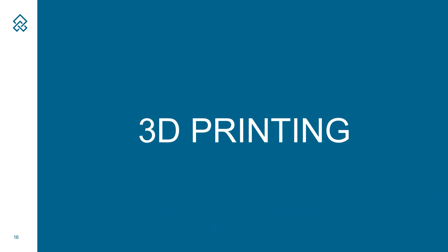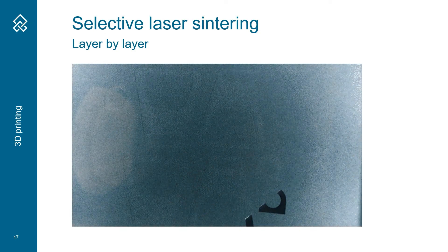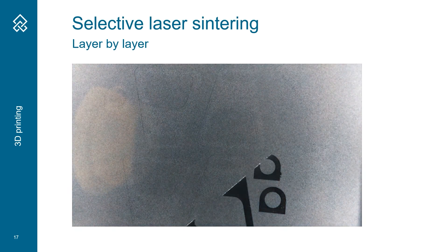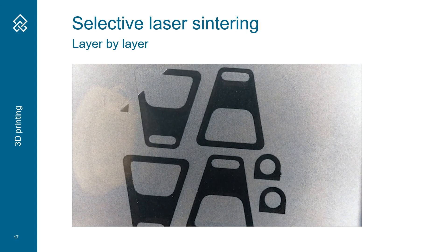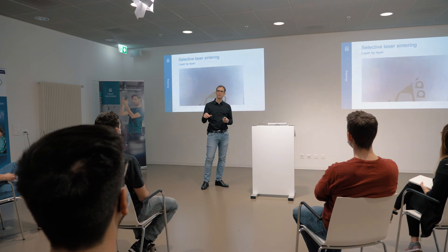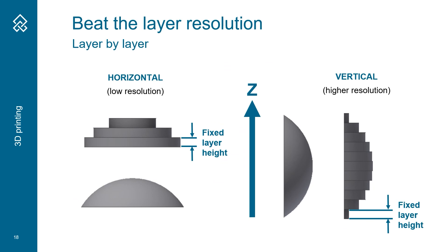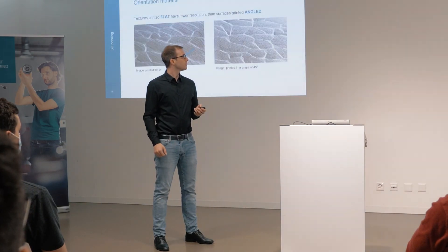Now I would like to tell you more about 3D printing. Selective laser sintering belongs to the family of powder bed fusion, which means we have a fixed layer height of 0.1 millimeters. That's very important to keep in mind when placing your part into the powder bed. Here is an example using a sphere: placed horizontally it has very low resolution with only three layers in height, but placed vertically we gain a much higher resolution with approximately 11 layers thickness.